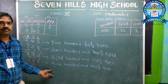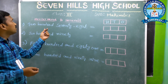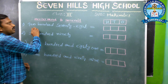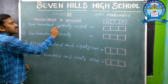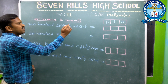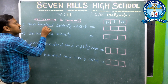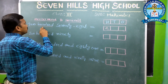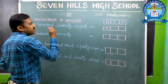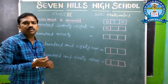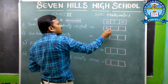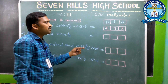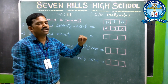Now we want to know number names to numerals — how to write number names to numerals. Read the question thoroughly: 278. How many hundreds is there? 2. In the 100s place you have to write 2. 70 means 7 tens — that's why it becomes 70. So in the 10s place, write 7. And in the 1s place it is 8. So the number is 278.